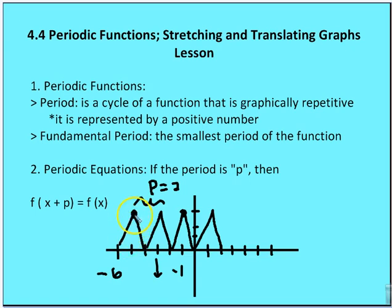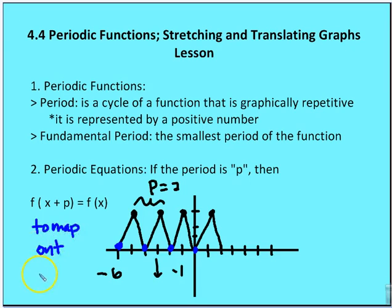If I add 2 — the period — to any point on the graph, I end up at the corresponding point one cycle over. What we're saying is that f of x plus p shifts the graph to map the function onto f of x. The period inside the parentheses just maps the function to the left or right horizontally, placing it right on top of the original function — you wouldn't know the difference other than you've shifted the function onto itself.